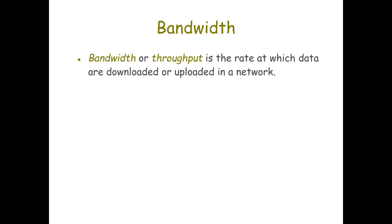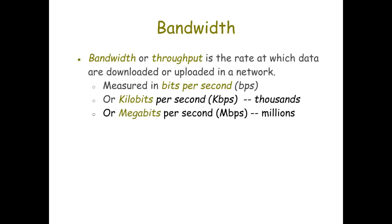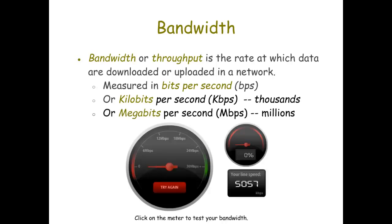First we're going to learn about bandwidth. Bandwidth, or throughput, is the rate at which data is downloaded or uploaded in a network. It can be measured in bits per second, kilobits per second, or megabits per second. Usually you see it either in kilobits or megabits per second.